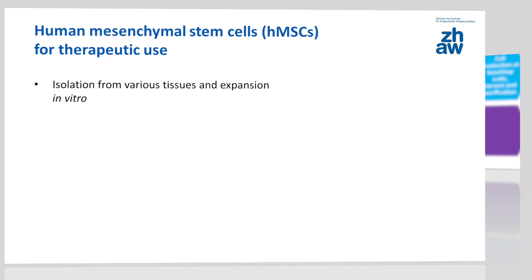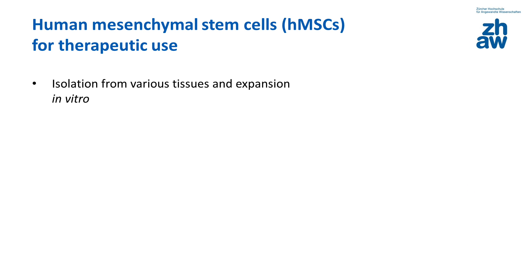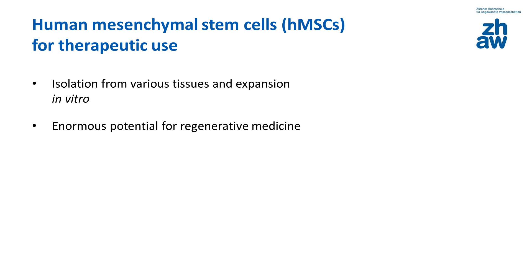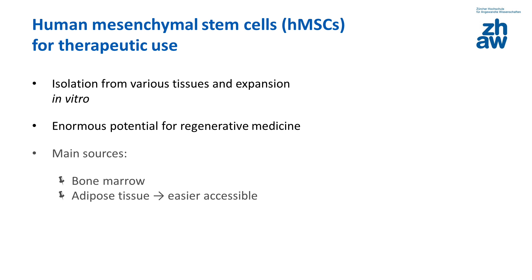Human mesenchymal stem cells, HMSCs for short, are a type of adult stem cell that can be isolated from various tissues and expanded in vitro. There are numerous reports on the possible clinical applications of HMSCs for the treatment of different degenerative diseases, which has sparked considerable interest in them. This is particularly because HMSCs can be accessed more easily than stem cells from bone marrow.